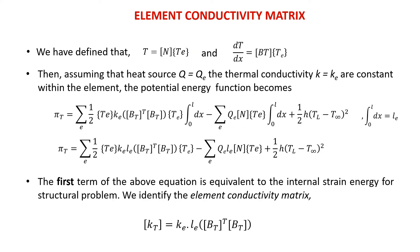Previously, we defined the temperature function as well as the temperature gradient. Then, by assuming the heat source and the thermal conductivity of the material are constant within the element, the potential energy function becomes as shown in this equation. The first term of the above equation is equivalent to the internal strain energy for the structural problem discussed in previous chapters. Therefore, we can identify the element conductivity matrix given by this equation.